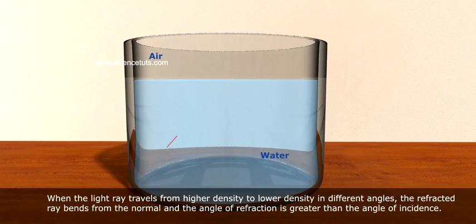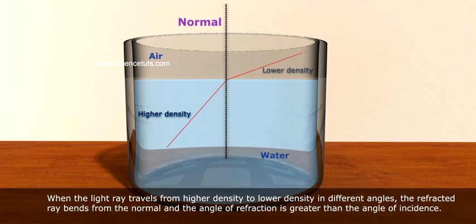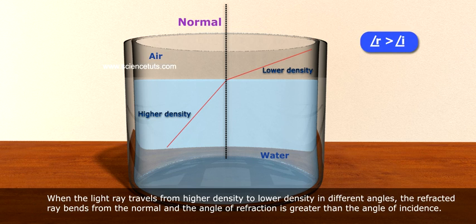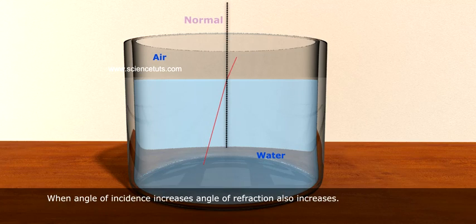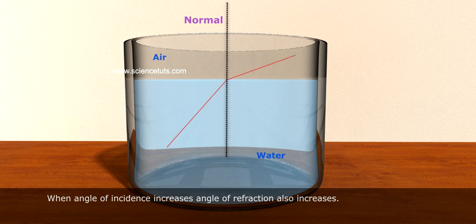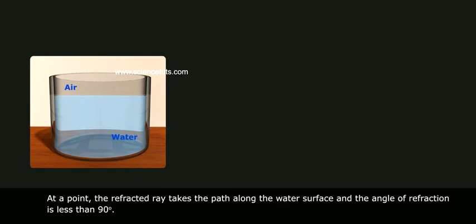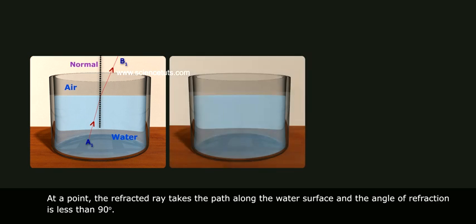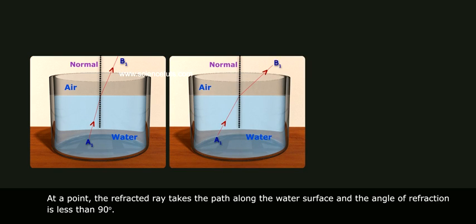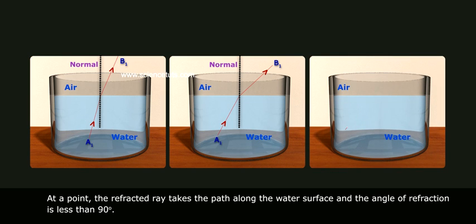When the light ray travels from higher density to lower density at different angles, the refracted ray bends away from the normal and the angle of refraction is greater than the angle of incidence. As the angle of incidence increases, the angle of refraction also increases, until at a certain point the refracted ray travels along the surface and the angle of refraction approaches 90 degrees.